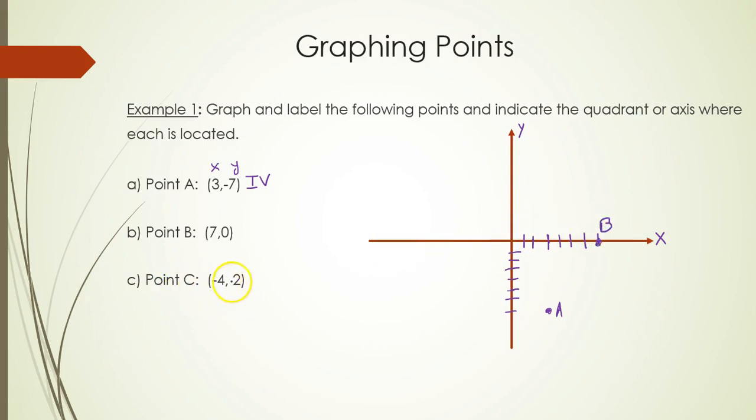Point C, (-4, 2). That's left 4, down 2. And that's going to be in quadrant 3. Point B is actually directly on the x-axis.